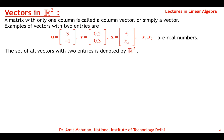Vectors in R2: any matrix with only one column is called a column vector, or simply a vector. So vectors are matrices with a single column. Depending on how many elements are in that column, the vector belongs to the space R, R2, or in general Rn. For example, a vector U with two entries — say 3 and minus 1 — belongs to R2, as does vector V with two real elements.